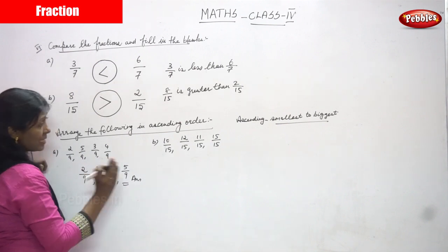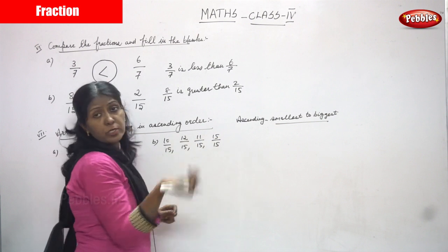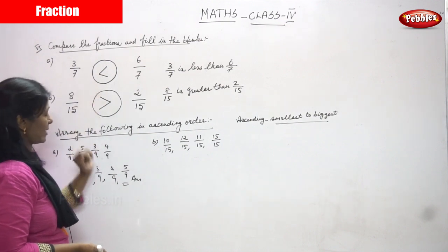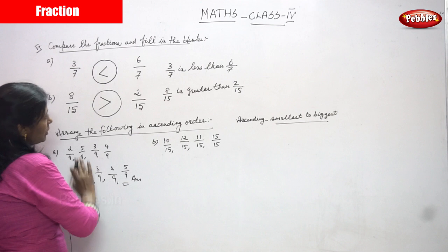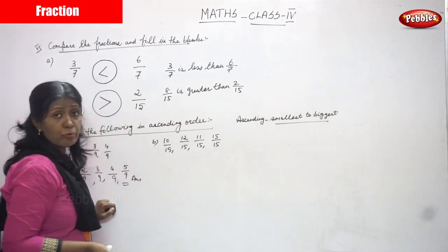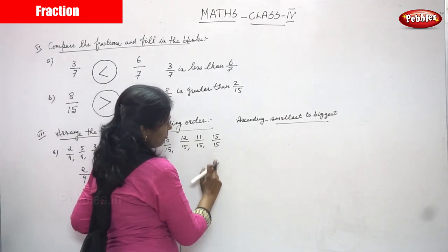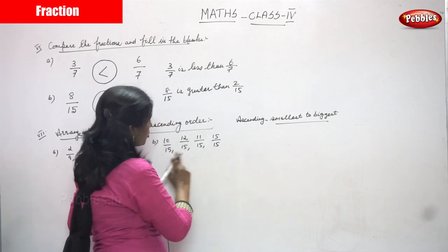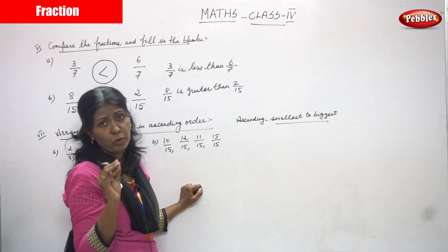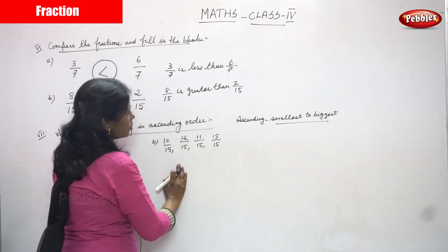Next sum: 10 by 15, 12 by 15, 11 by 15, and 15 by 15. Ascending means smallest to biggest. You can use signs, but since you are in fourth standard, just put a comma between the fractions. Always look at the denominators first — all denominators here are the same, so move to step two and look at the numerators.